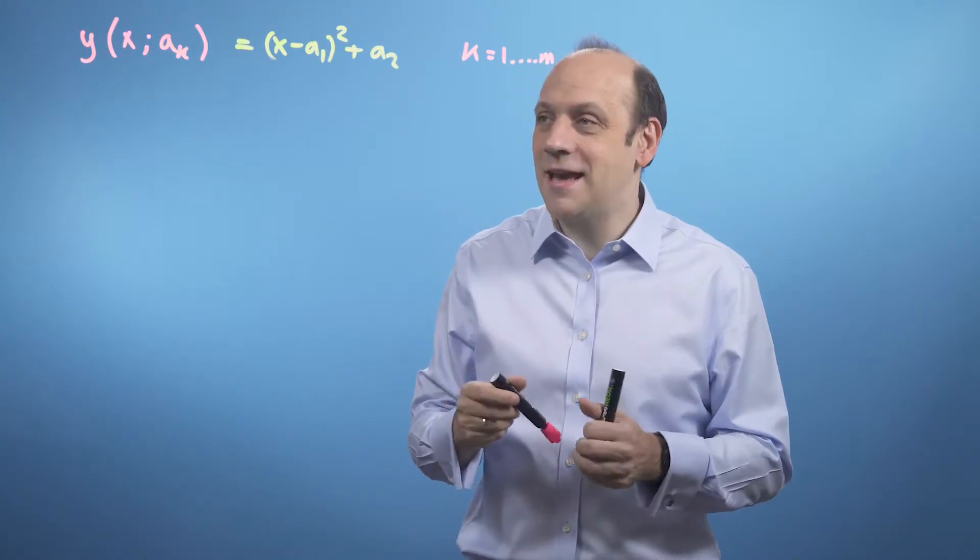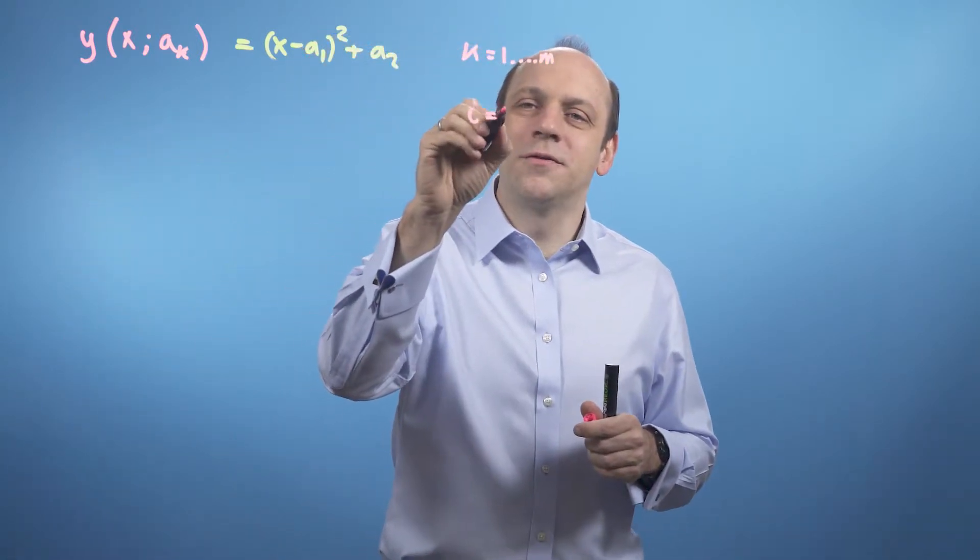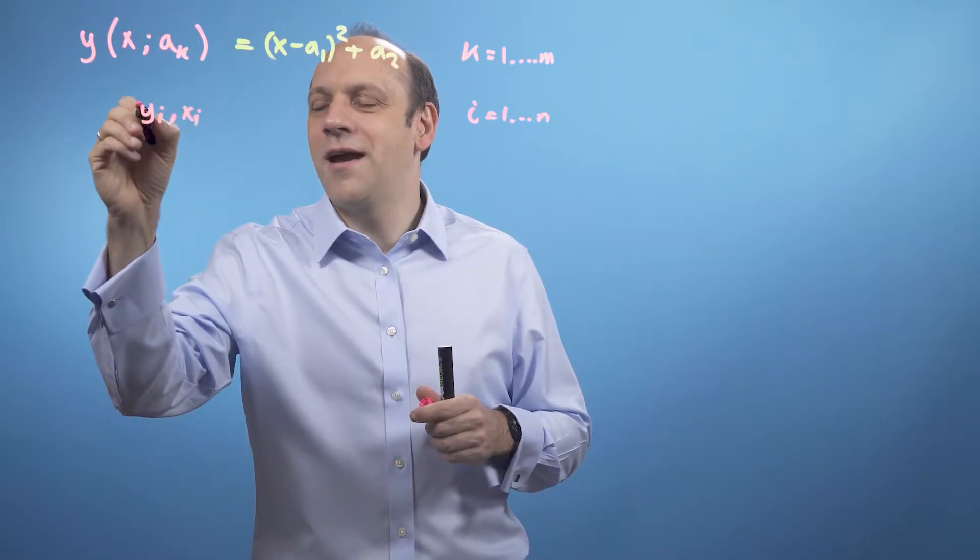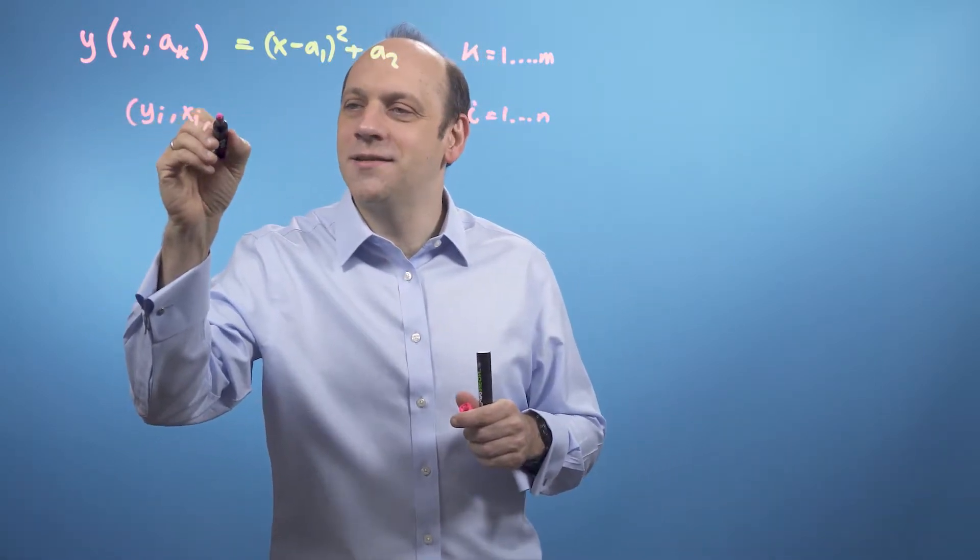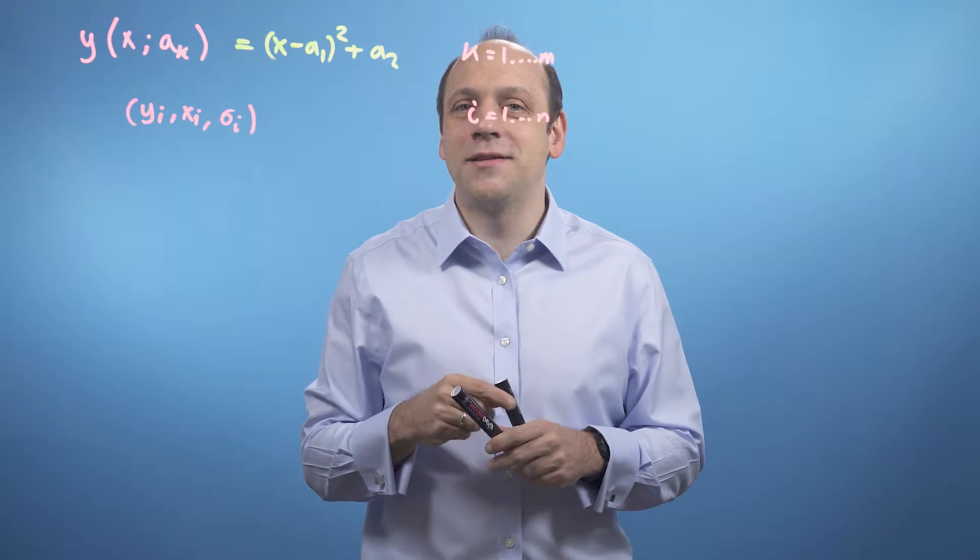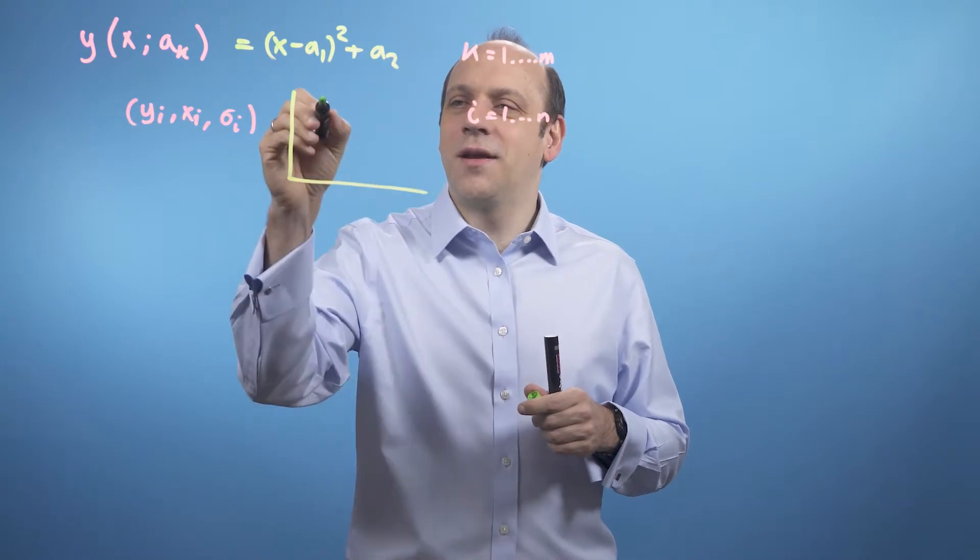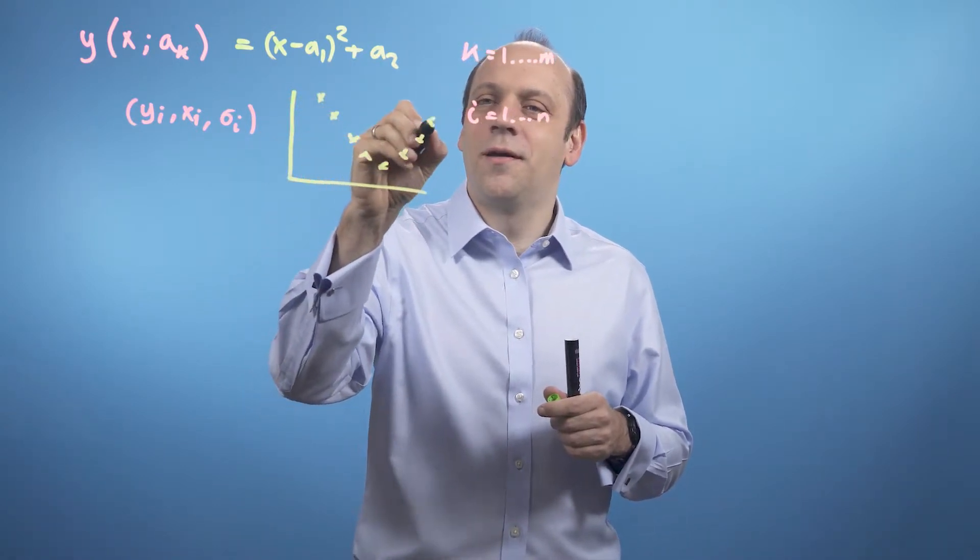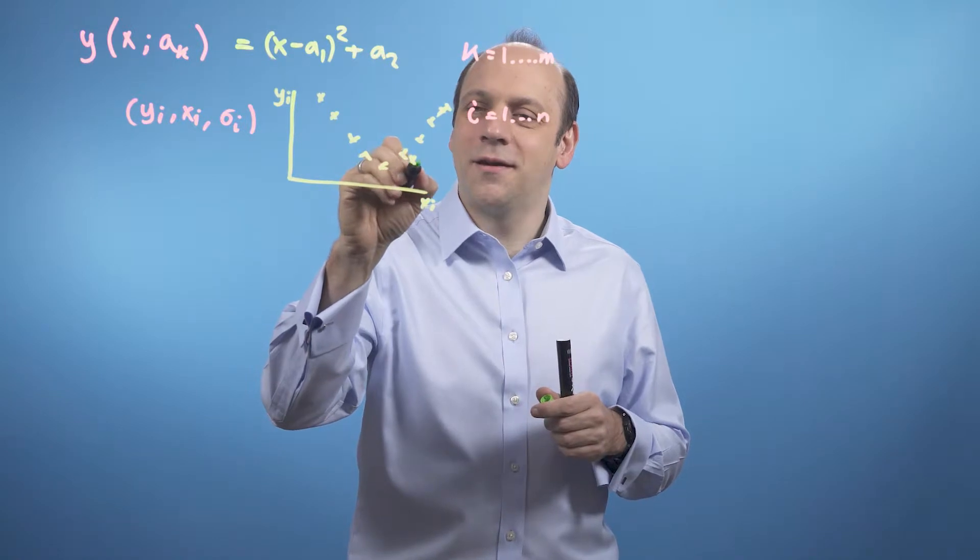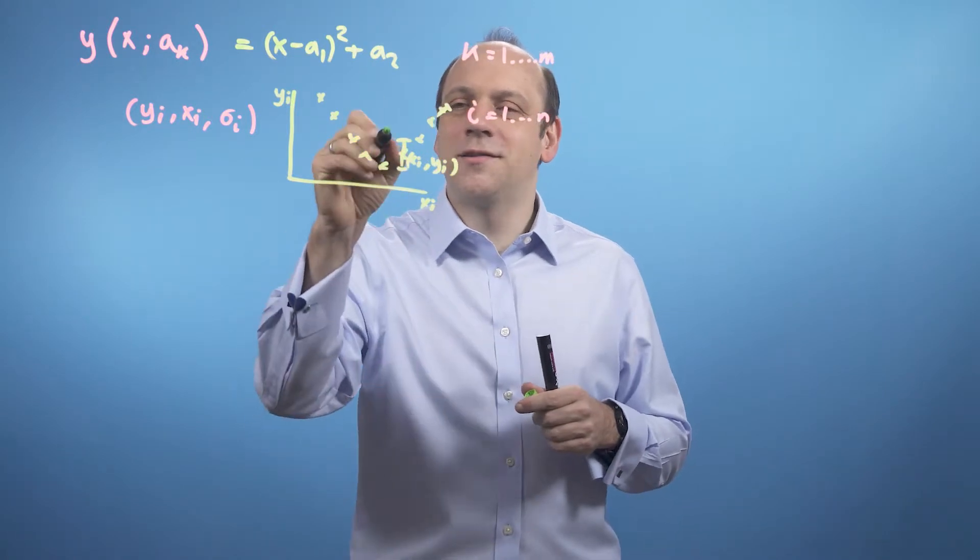Now, say I want to fit the parameters a_k to some data. So I've got some data observations. I've got i equals 1 to n of them, and I've got pairs of data, yi and xi. So for every x, I've got a y. And I have an associated uncertainty, sigma i. That is, the more uncertain I am about the data point yi, the bigger the uncertainty sigma is going to be. So I can sketch that out, something like this, as an example of my yi's and my xi's. So I've got an xi, yi, and each one's got an uncertainty sigma i there.